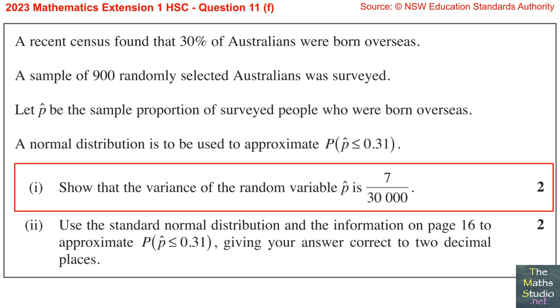Question 11, part F. A recent census found that 30% of Australians were born overseas. A sample of 900 randomly selected Australians were surveyed. Let P-hat be the sample proportion of the surveyed people who were born overseas. A normal distribution is to be used to approximate the probability that the sample proportion is less than or equal to 0.31. Part 1: Show that the variance of the random variable P-hat is 7 over 30,000.